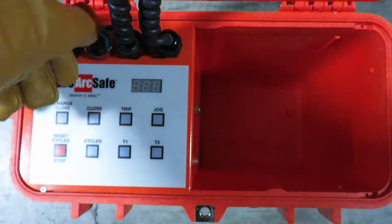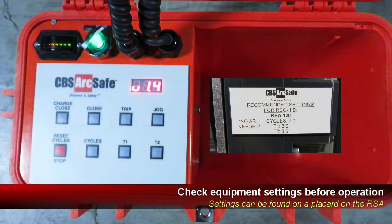To operate the RSA-120, first turn on the RSO. Verify the operation settings in your RSO by pressing the button for each setting.